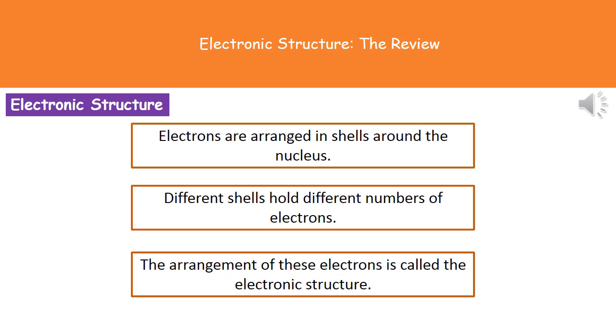Once we look at the periodic table, one of the things we work out is the number of electrons present in each element. We need to understand that the arrangement of these electrons follows a specific pattern. Around the nucleus of our atom, electrons are arranged in shells, and different shells can hold different numbers of electrons. The arrangement of electrons is referred to as the electronic structure.